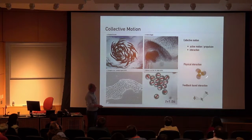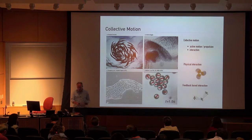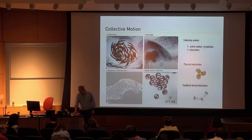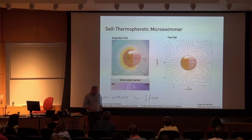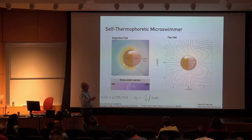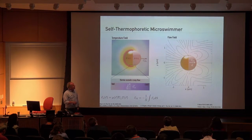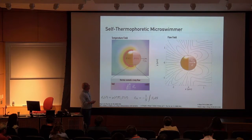We would like to study these physical interactions first, to characterize them and find a way to control these particles even in large ensembles. The system we've chosen is a Janus particle. It consists of a plastic bead with a gold cap on the back side, and the gold cap can be heated by a laser very easily, so you can switch the heating on and off very easily.